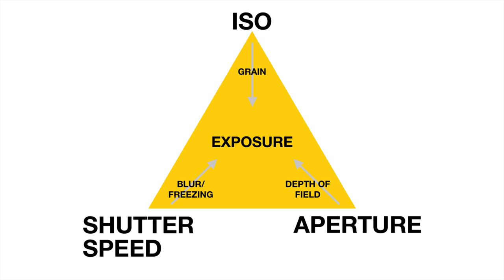And lastly is the ISO, which is the sensitivity of your camera. This is really going to drive the camera sensor's sensitivity. But if you push this too high, you get grain.